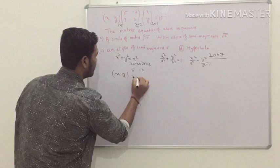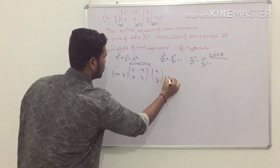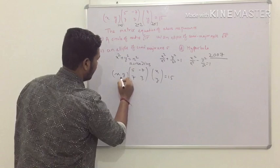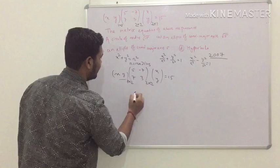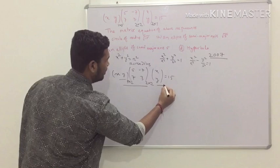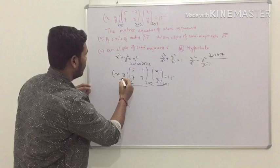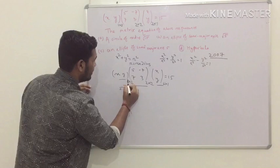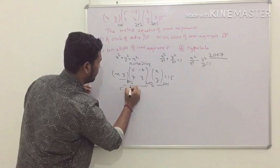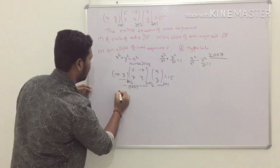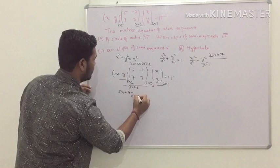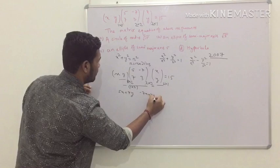Let's start solving the problem. The matrices are [x, y] × [[5, −7], [7, 3]] × [x, y]ᵀ = 15. From the rule of matrix multiplication, first multiply the 1×2 matrix with the 2×2 matrix. The resultant matrix is of order 1×2 and can be written as [5x + 7y, −7x + 3y].